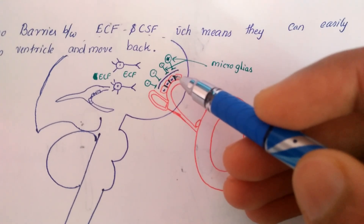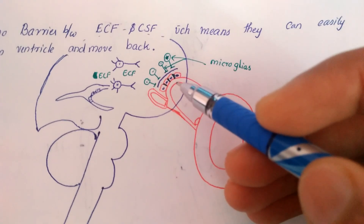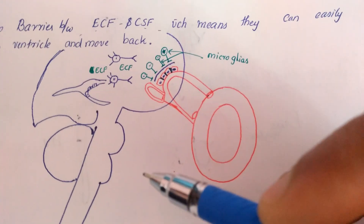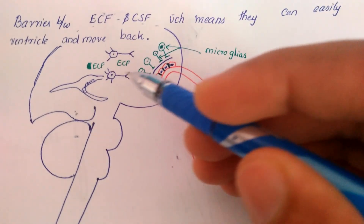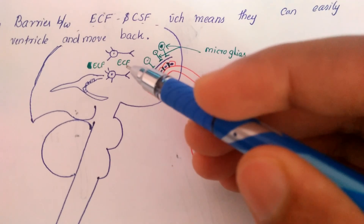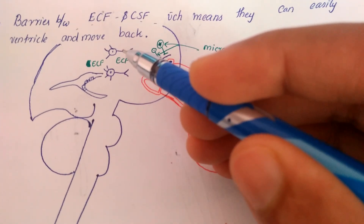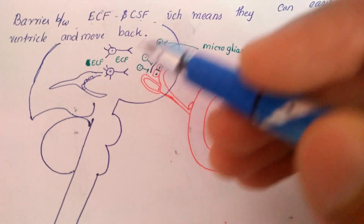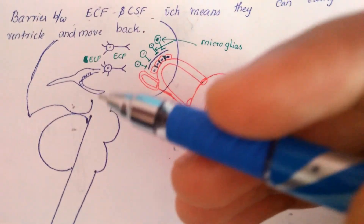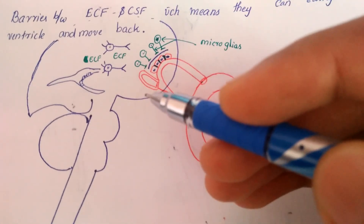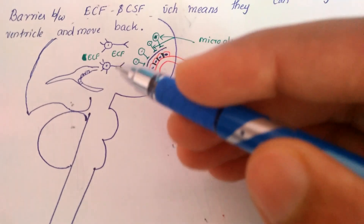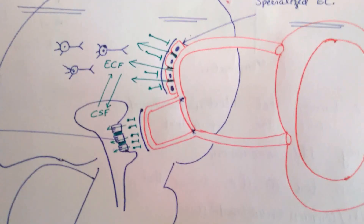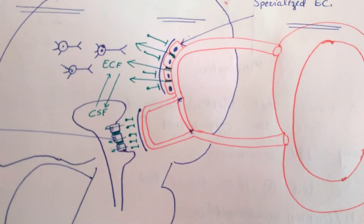Further studies confirmed that in the blood-brain barrier there are specialized endothelial cells which have tight junctions. These tight junctions do not allow the entire blood fluid into the central nervous system. The filtered fluid is known as extracellular fluid, which provides nourishment to the neurons and the glial cells — including astrocytes and microglia — which support the neurons.